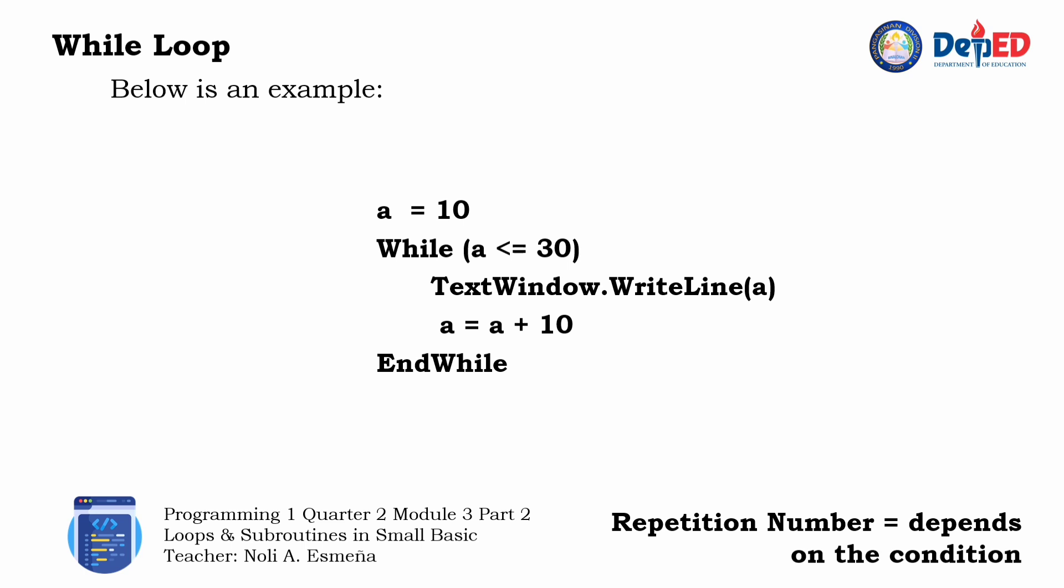Here is an example of a while loop. The code is started by setting the initial value of a, which is equal to 10. This is followed by the keyword while, which indicates the start of the while loop. Followed by a condition to determine if the looping process will still continue or not.